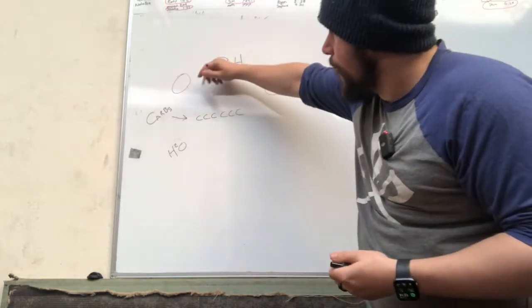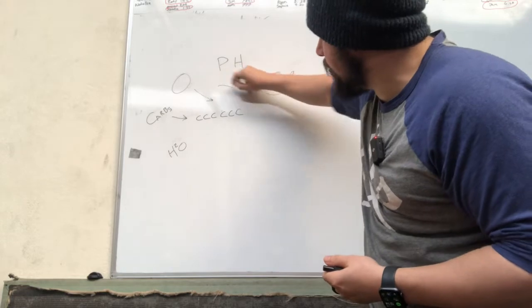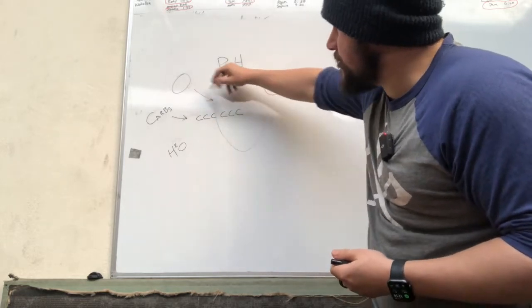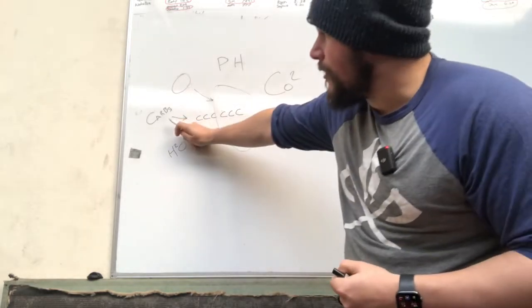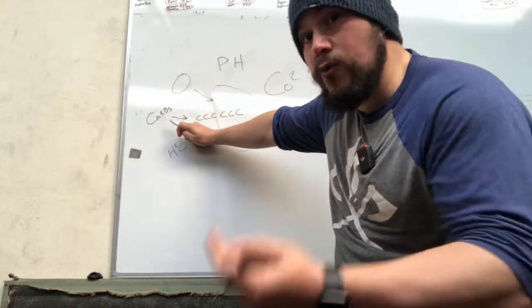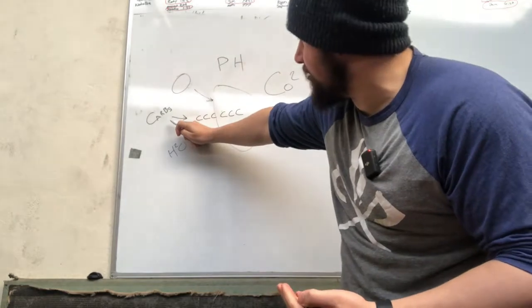Oxygen, we breathe in. So this is a system here. I'm going to draw a big circle. Oxygen goes in. When we exercise really hard, our need for carbohydrates goes up. We use mainly carbohydrates in high intensity exercise.